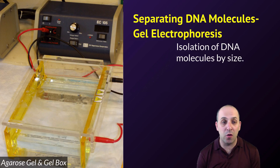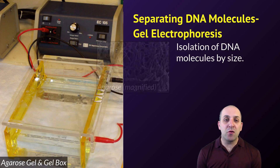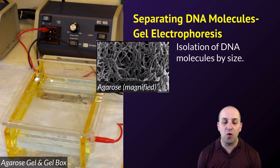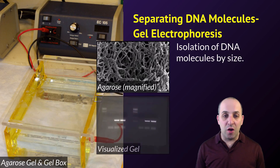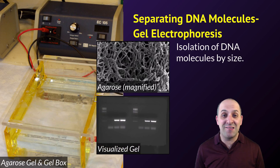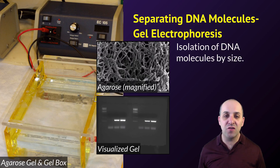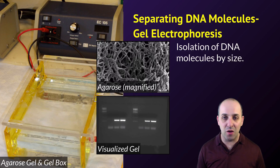If we look at it microscopically, we'll see that the gel is actually a matrix of microscopic tunnels and holes that the DNA moves through. After the DNA moves through the gel, the results are usually visualized by staining the gel with a chemical that binds to the DNA and then looking at it under UV light. That leads to a picture where the bands you see are collections of DNA molecules of different sizes that have moved to different places in the gel.